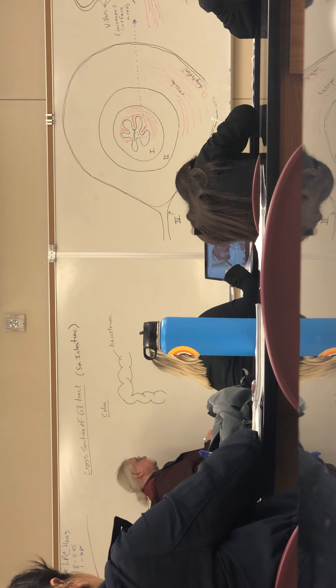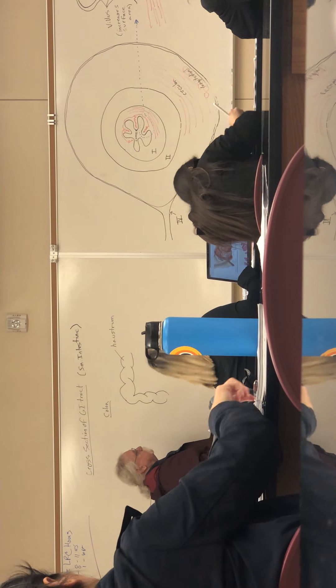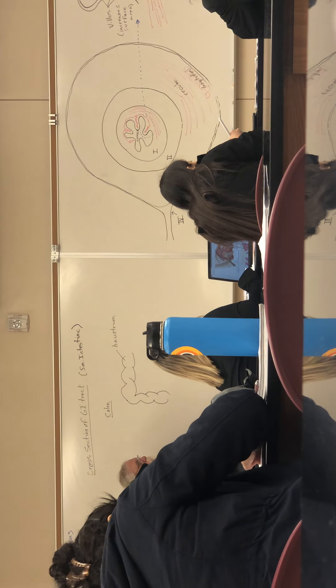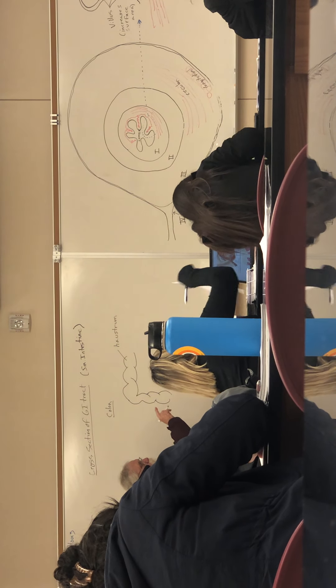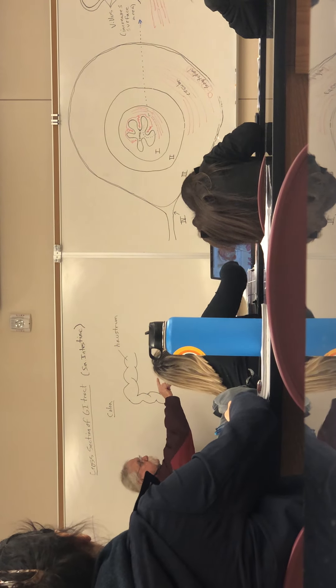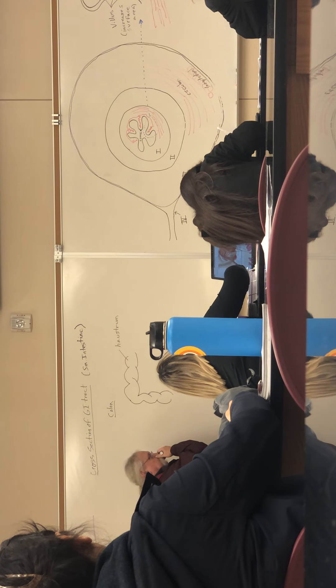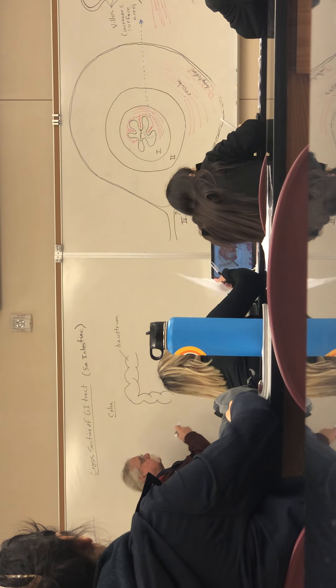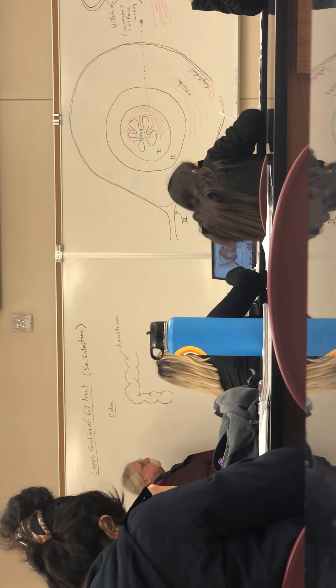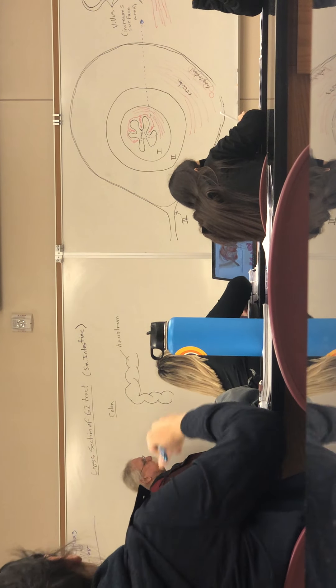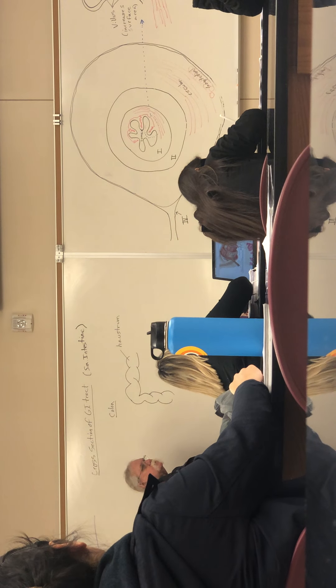They pouch up because their Tunica Muscularis is not complete like the Tunica Muscularis that we just drew. The Tunica Muscularis over there has a circular inner layer that goes all the way around the entire GI tract, and then that could be surrounded by the longitudinal layer.